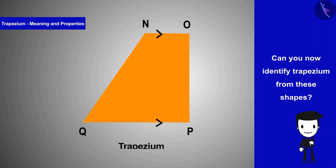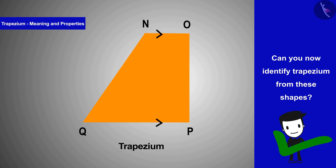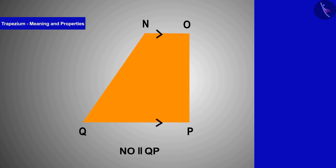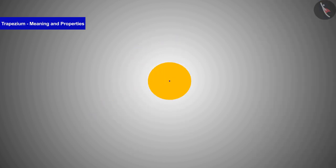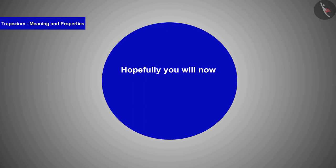This orange shape is a trapezium because we can see that a pair of sides in this quadrilateral is parallel. Hopefully, you will now be able to identify trapezium.